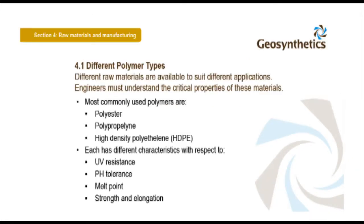Different raw materials are available to suit different applications. Engineers must understand the critical properties of these materials. Most commonly used polymers are polyester, polypropylene, and high-density polyethylene. Each has different characteristics with respect to UV resistance, pH tolerance, melt point, strength and elongation.